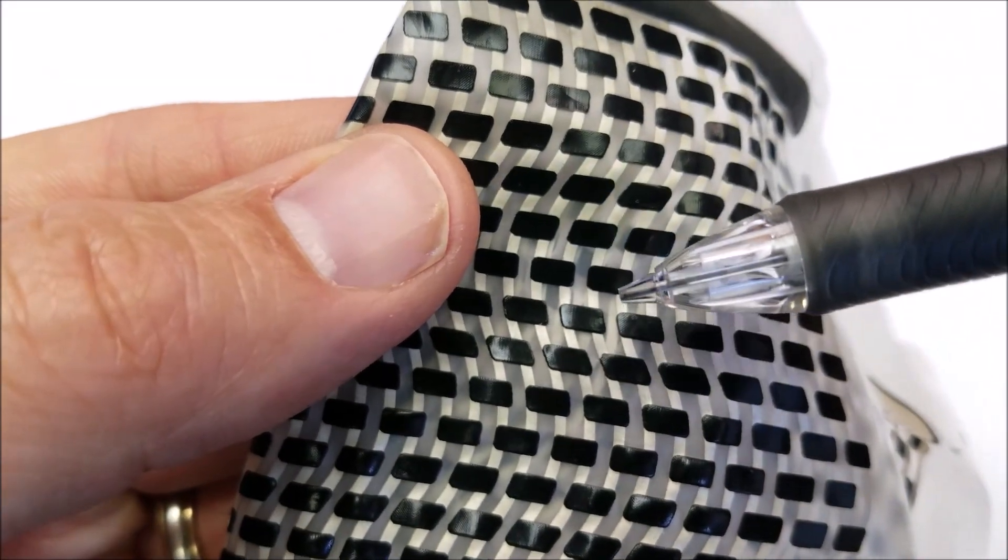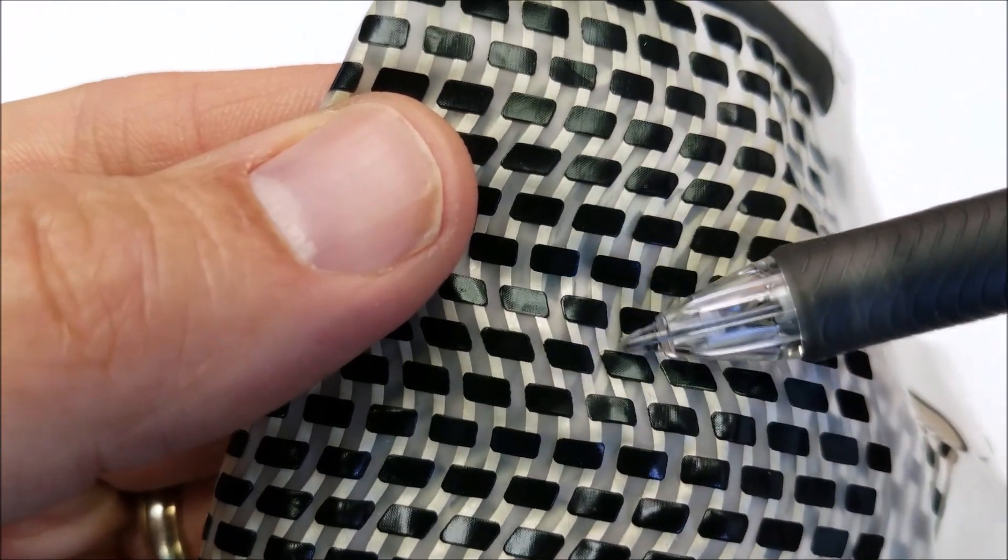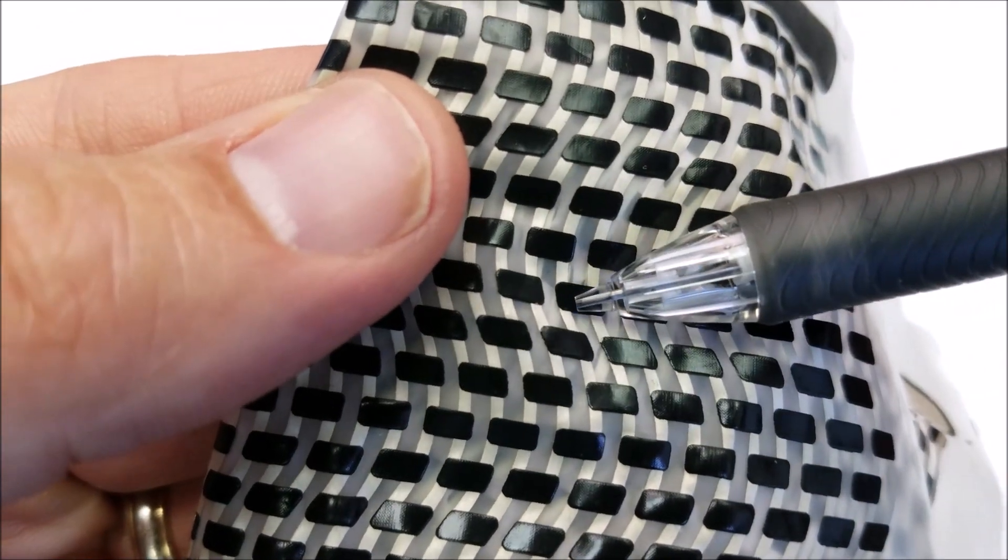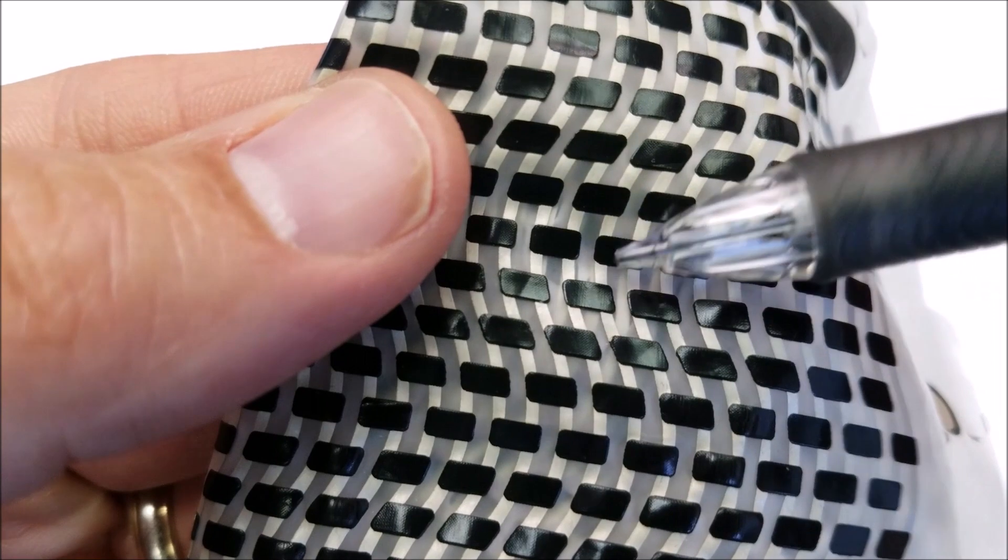You're looking at a flexible TPU. The heater is comprised of silver traces with carbon pads that connect those traces. That's what's used as the heating element.